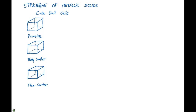In this course, all we're going to be doing is looking at cubic unit cells. In a cubic unit cell, all sides are going to be equal and all angles are 90 degrees. There are three main types of cubic unit cells that we're going to look at: primitive, body-centered, and face-centered.